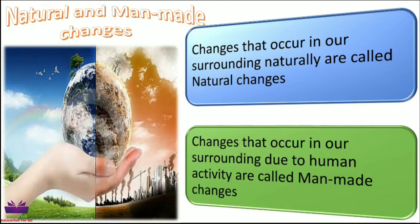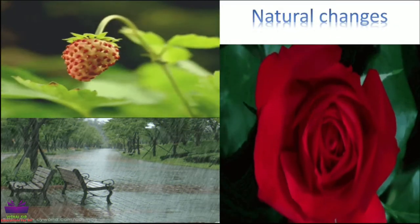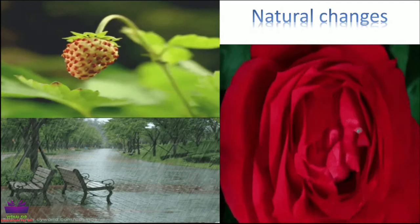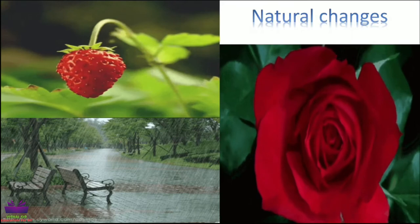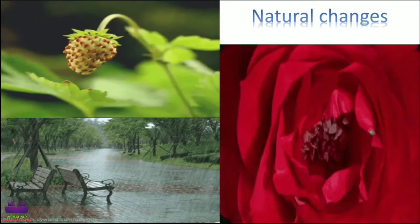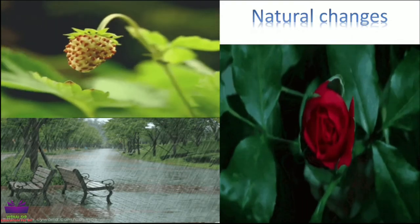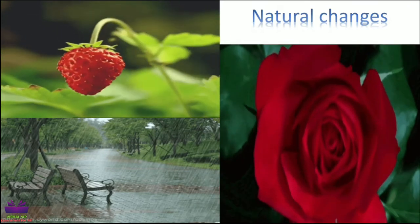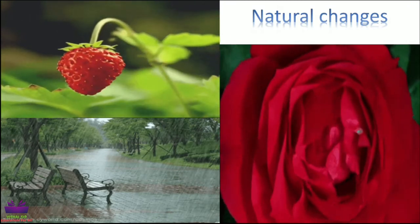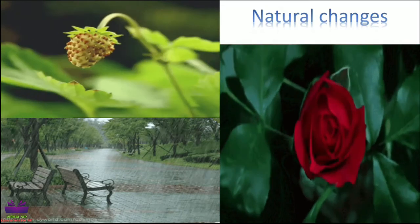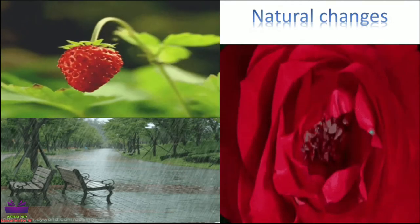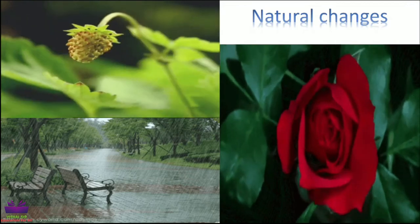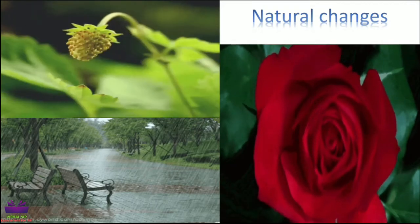Let us watch the examples of each. Here are a few examples of natural changes. A fruit getting ripe — you can see here a strawberry is getting ripe, and this happens naturally. The second example is that of rainfall. And the third example is that of a bud blooming into a flower. All these things happen naturally in our surroundings, so they are called natural changes.